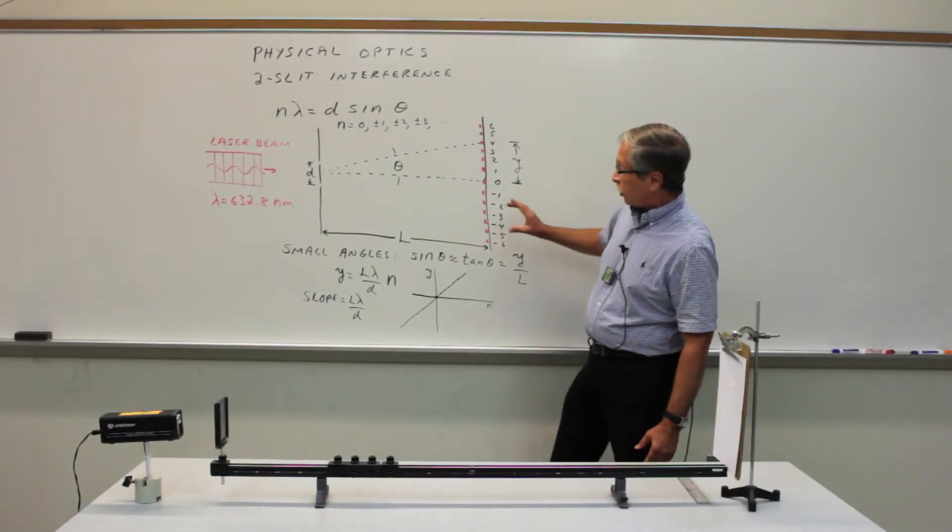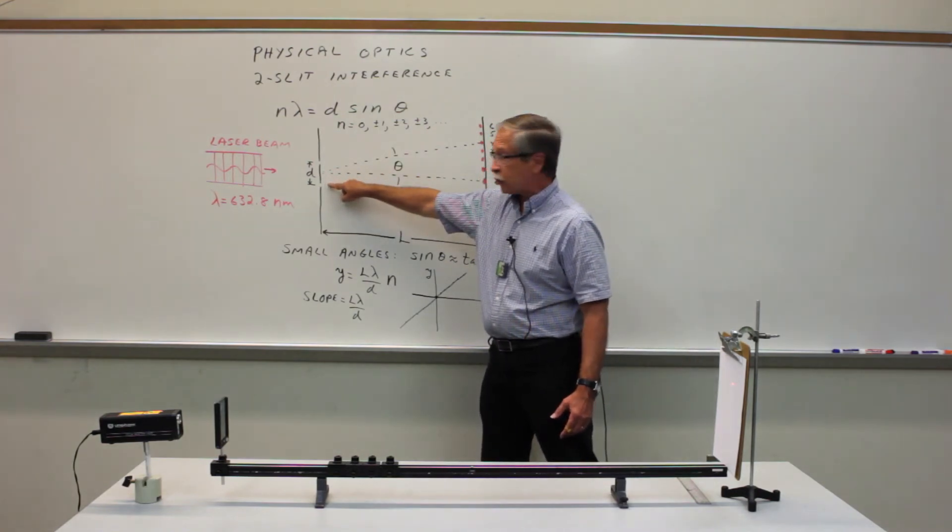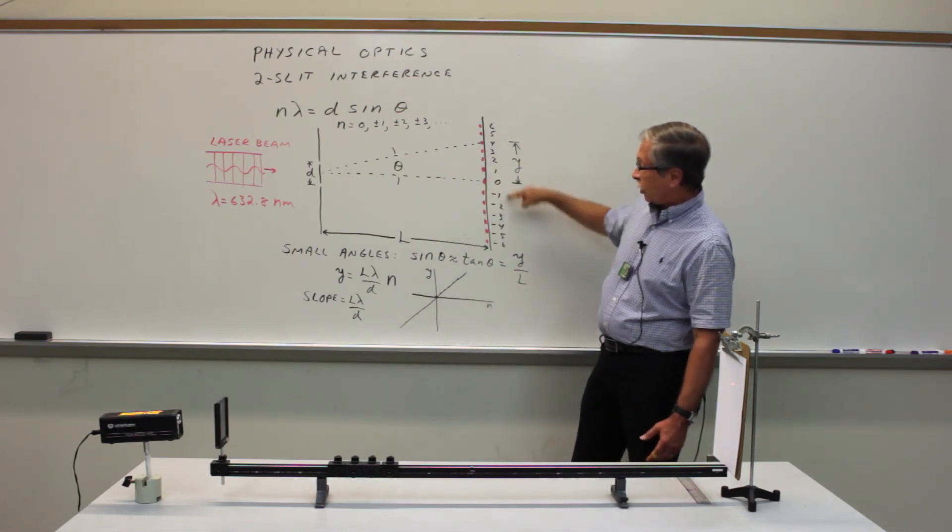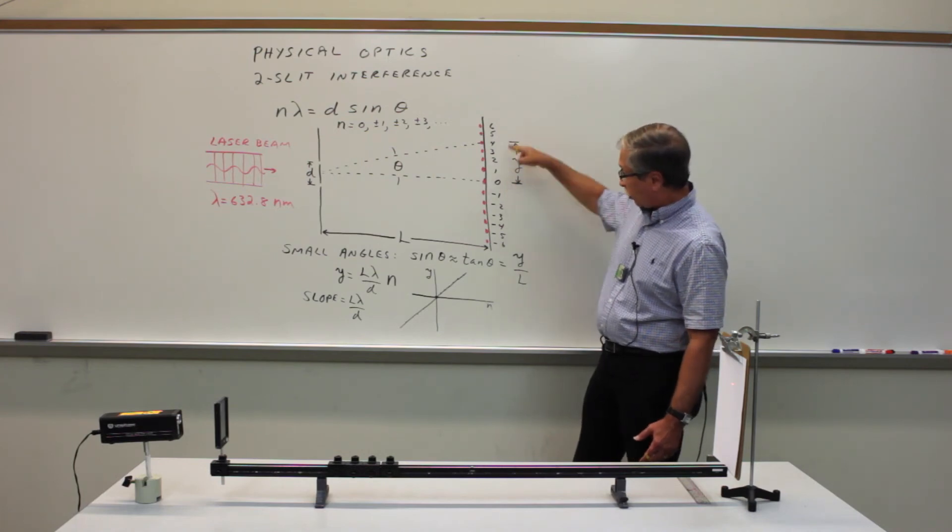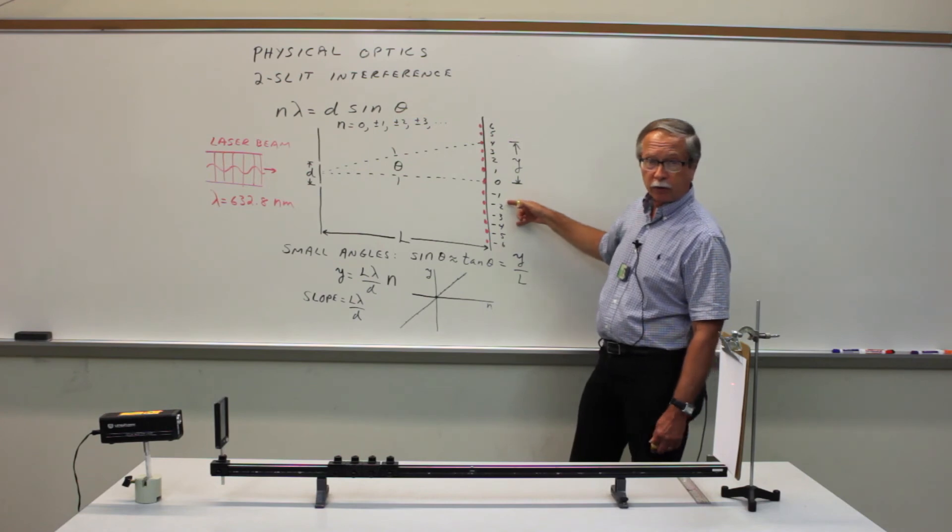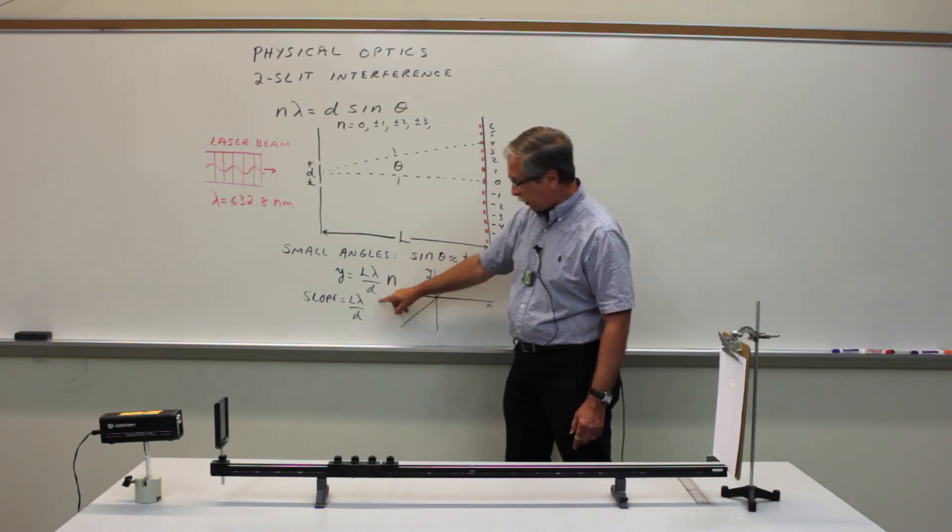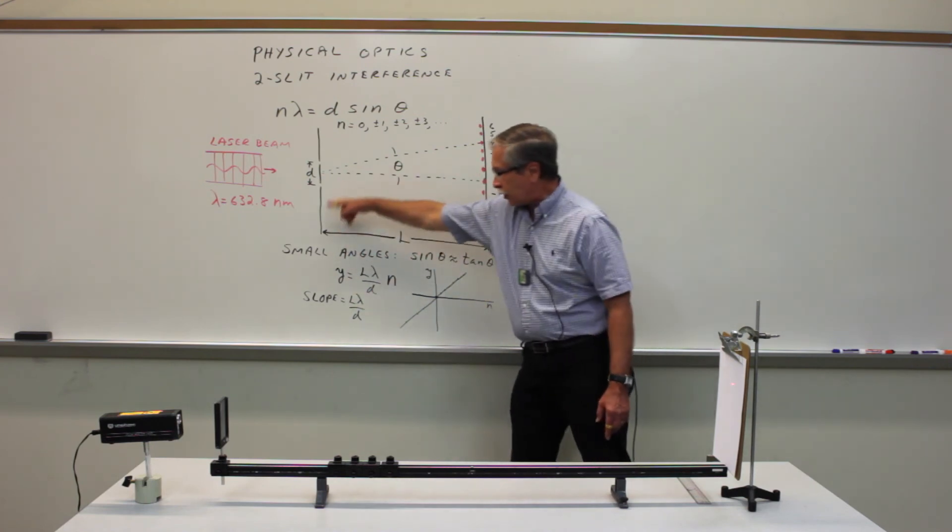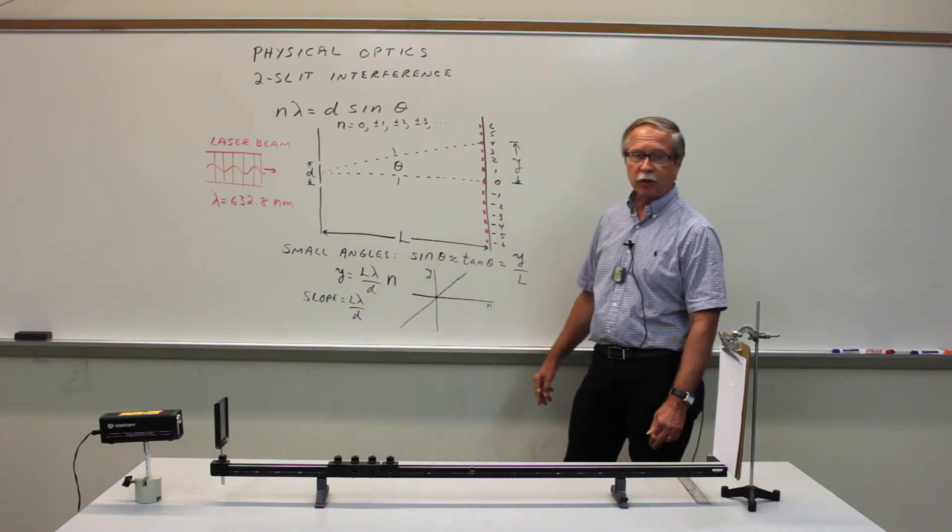So to summarize, what we're trying to determine is the separation d between a pair of slits. And that's done by measuring the location of the bright spots, the constructive interference spots, plotting the position of the spot as a function of the number of the spots, the order of interference. The slope of that plot is L lambda over d. And if you know the wavelength and you measure the distance from the slit to the screen, you can calculate what the separation is.